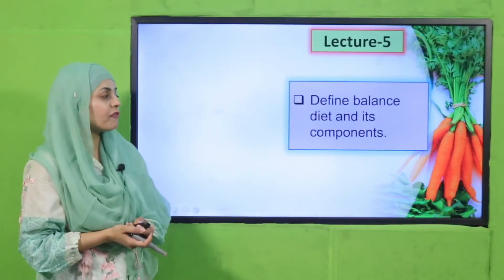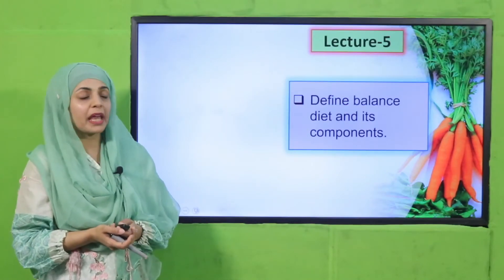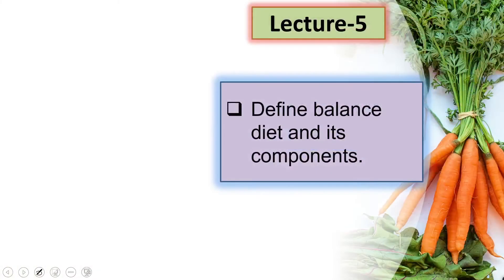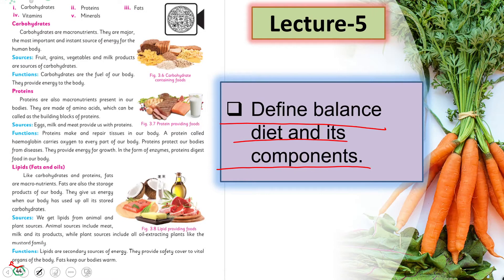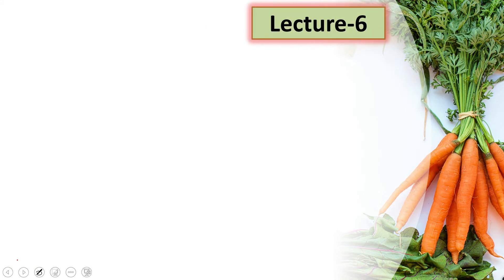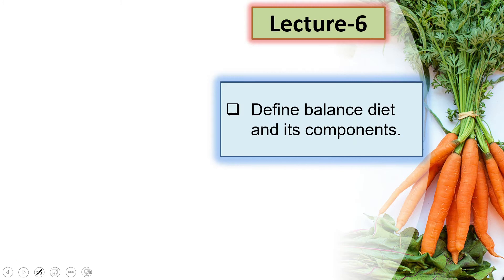In Lecture Number 5, students will be able to define balanced diet and its components, and we will examine those components. The page under discussion is page number 44. In Lecture Number 6, students will also define balanced diet and its components, with the page under discussion being page number 45.